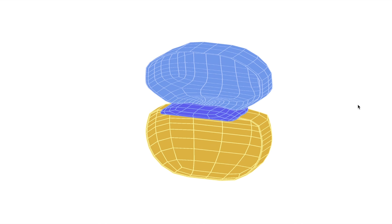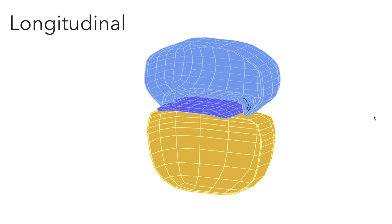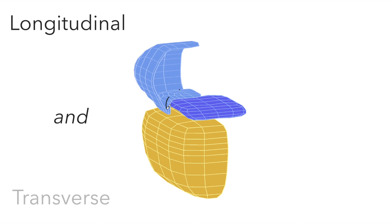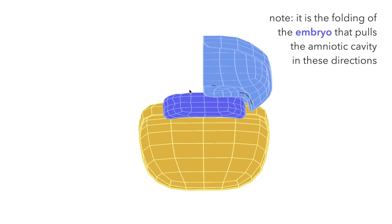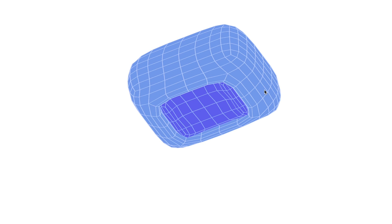Around the middle of the third week of development, the amniotic sac begins to fold downward, like so. It sort of looks like a mouth enveloping these parts of the embryo and some of the yolk sac.